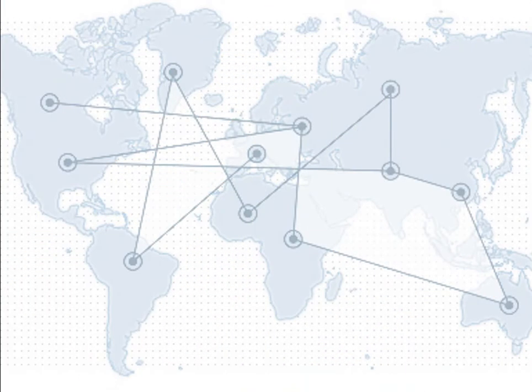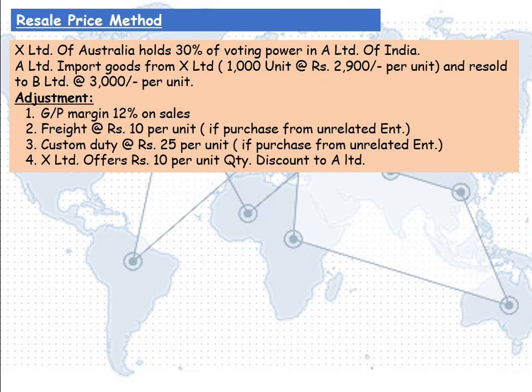Our next method is the Resale Price Method. X Limited of Australia holds 30% of the voting power in A Limited of India. A Limited imports goods from X Limited — that is 1000 units at the rate of Rs 2,900 per unit — and resells to B Limited at the rate of Rs 3,900 per unit. Adjustments given: gross profit margin is 12% on sale, freight at Rs 10 per unit if purchased from unrelated enterprises, custom duty at Rs 25 per unit if purchased from unrelated enterprises, and X Limited also offers Rs 10 per unit as a quantity discount to A Limited.